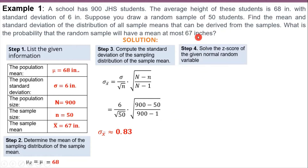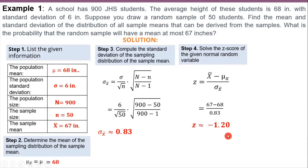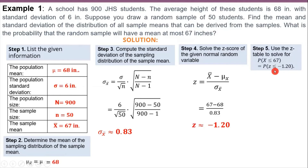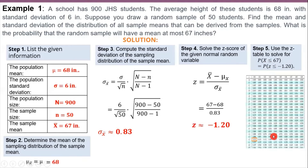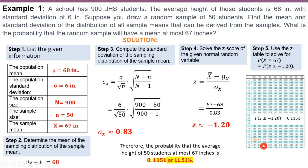For step 4, we standardize our given normal random variable, which is 67, using the z-score formula. So z is approximately negative 1.20. We are asked to find the probability at most 67 inches — meaning 67 or less than 67. So we look for the probability that x is less than or equal to 67, which is equivalent to the probability that z is less than or equal to negative 1.20. Using our z-table, the probability is 0.1151. Therefore, the probability that the average height of 50 students is at most 67 inches is 0.1151 or 11.51%.